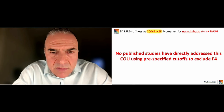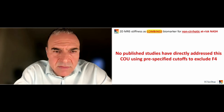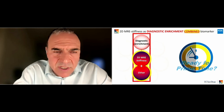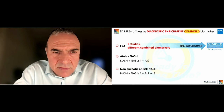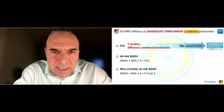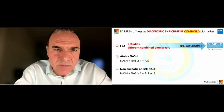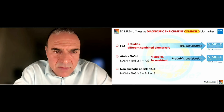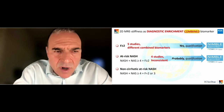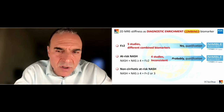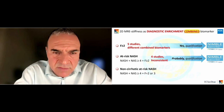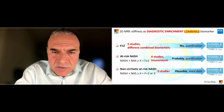For non-cirrhotic at-risk NASH combined with other biomarkers, no studies have directly addressed this context of use. So is MRE in combination with other biomarkers ready for prime time? For F greater than or equal to 2: five studies with different combined biomarkers — the data is fairly compelling, and we hope to qualify MRE in combination with other biomarkers at NIMBLE. For at-risk NASH: four studies with inconsistent data, but MRE in combination will probably be able to detect at-risk NASH, and we hope to qualify it in NIMBLE. For non-cirrhotic at-risk NASH: zero published studies, but quite plausible that MRE could exclude cirrhosis — we need data and hope to get it in NIMBLE.